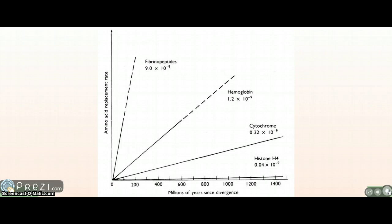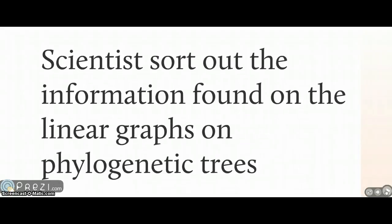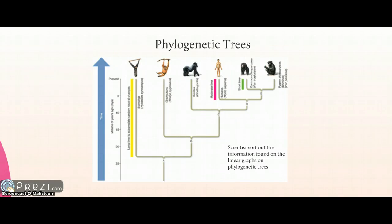This graph shows the first four proteins discussed and the rates at which their genes mutate. Scientists sort out information from the linear graphs onto phylogenetic trees. Phylogenetic trees can combine information from molecular clocks based on different proteins — for example, for a divergence of 25 million years ago you might use a protein that mutates more slowly, whereas for two more closely related species you might use a different protein that mutates faster.